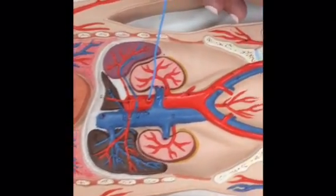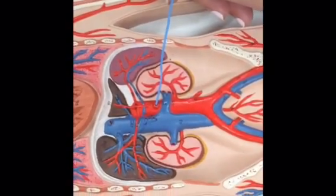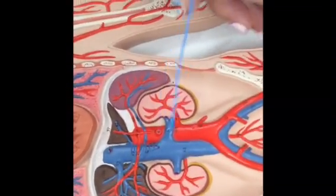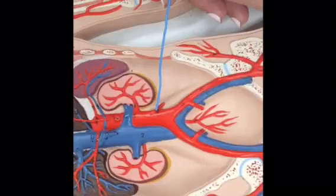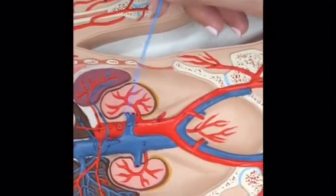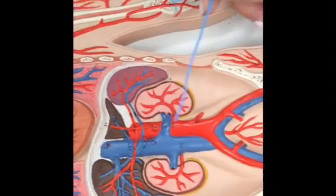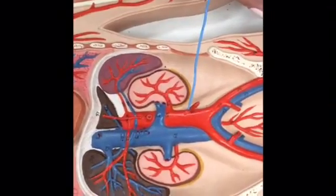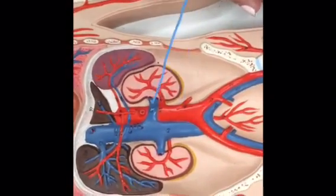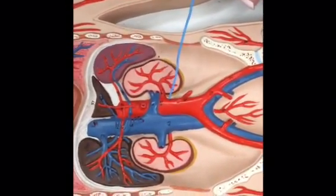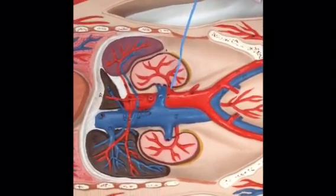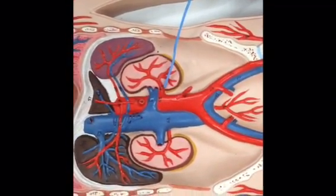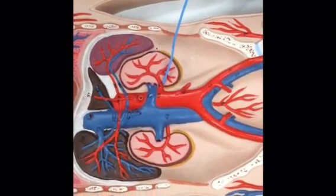The second unpaired branch is the superior mesenteric artery, which is this one right over here. The third one is the inferior mesenteric artery. Between the superior and inferior mesenteric arteries, you have a paired branch going one to each side, which is the renal artery.